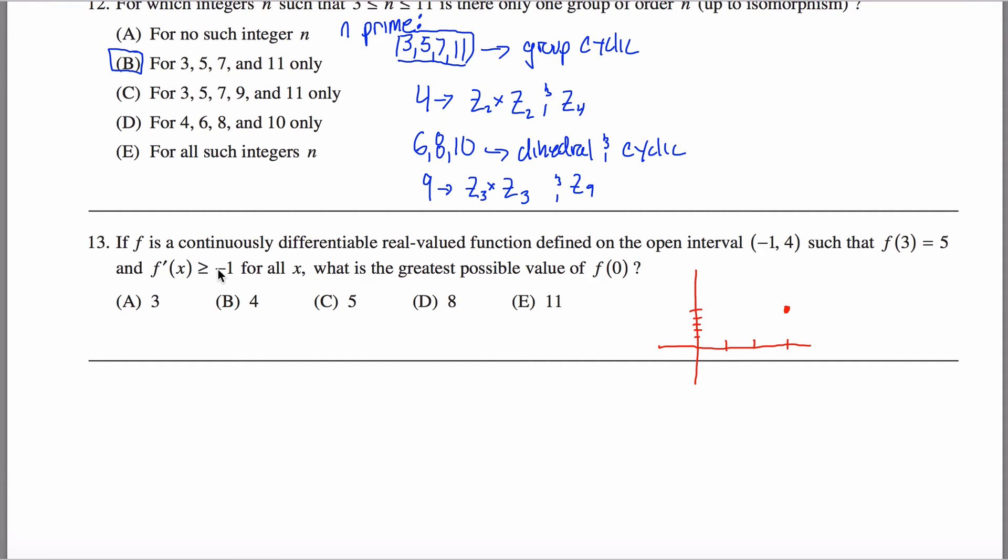So the furthest negative this thing can possibly get is negative one. So worst case scenario, I only get one higher every time I take a step over, one higher, one higher. So if I was at five right here, and I took three steps over,